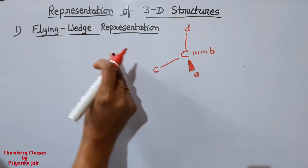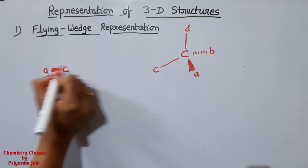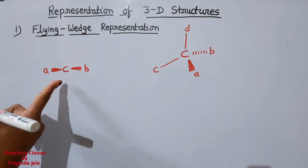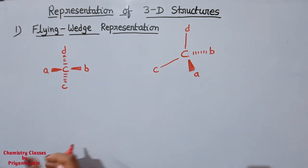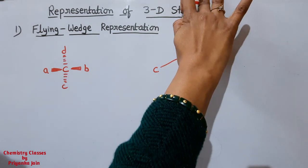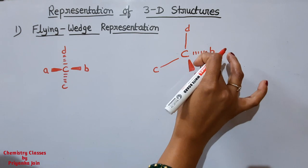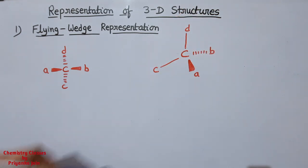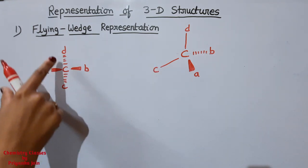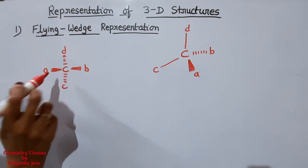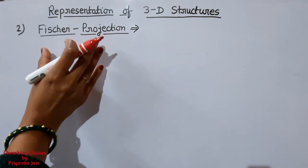Another way to represent the flying wedge formula is by rotating the molecule. If we fix the two in-plane bonds and rotate, the bond that was above the plane and the one below the plane will both come above, while the two original in-plane bonds will go below the plane — shown as dash lines. The second common method is the Fischer projection.